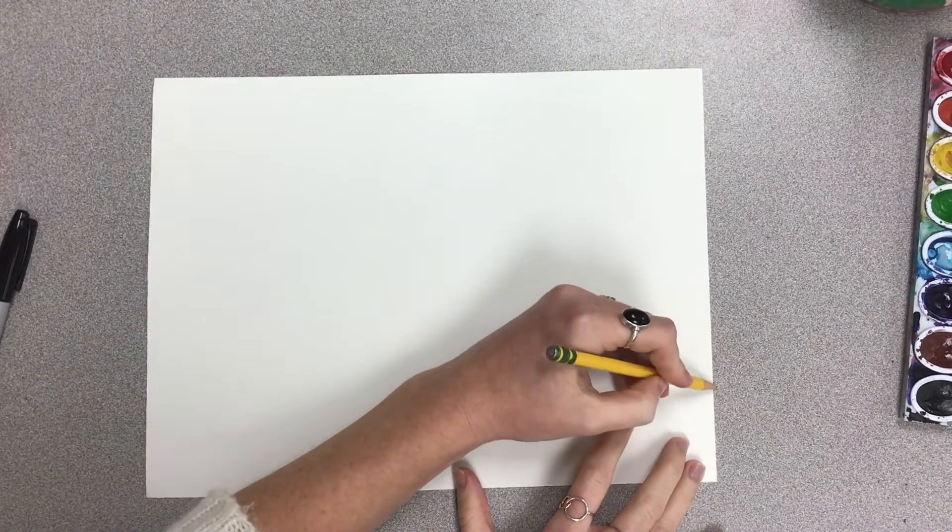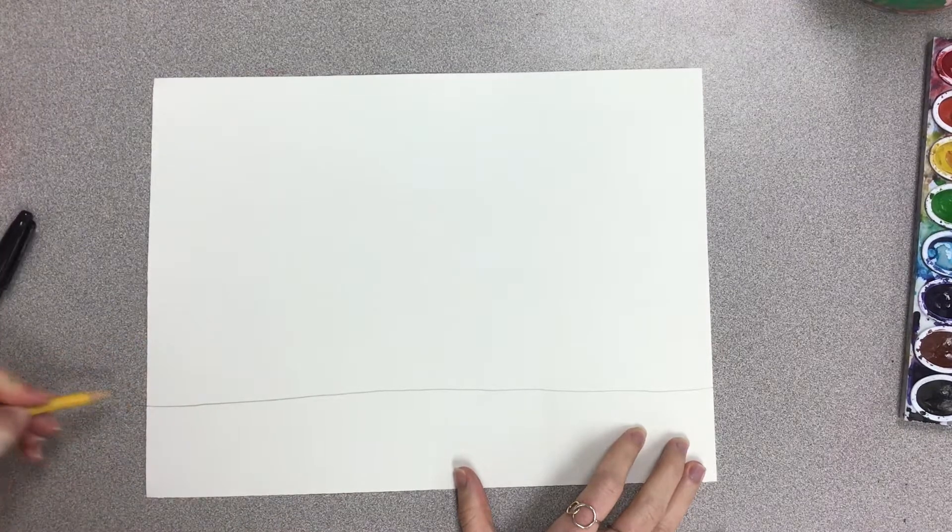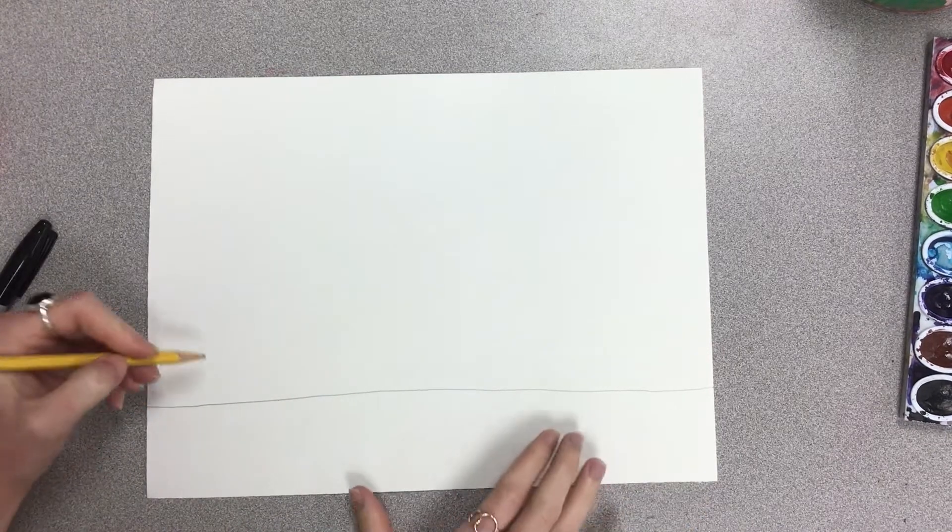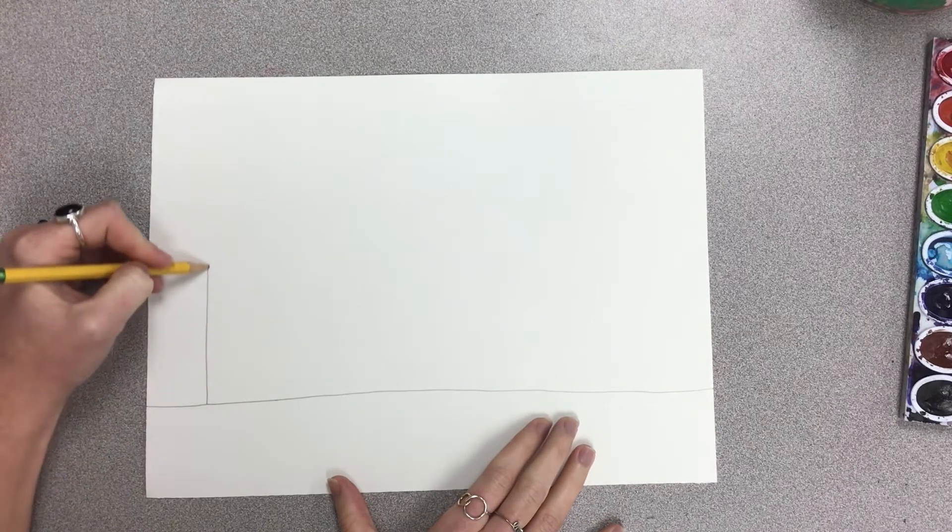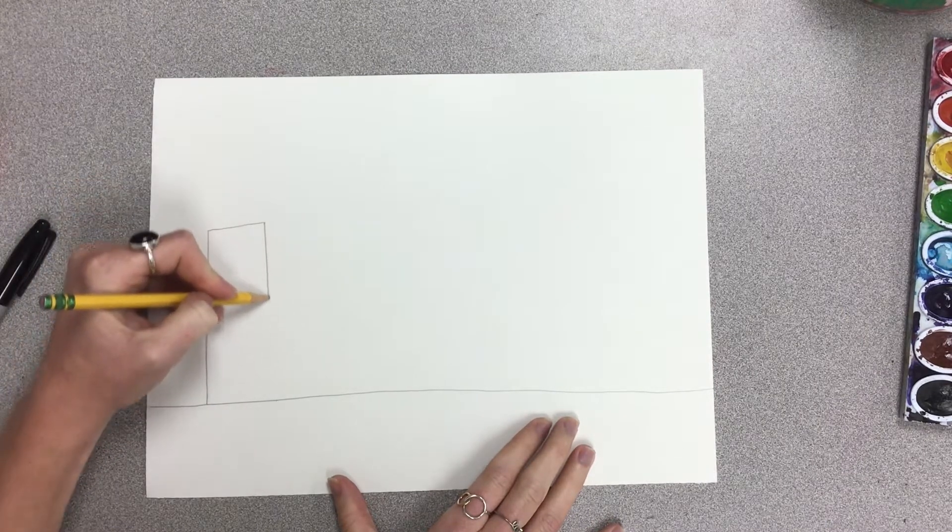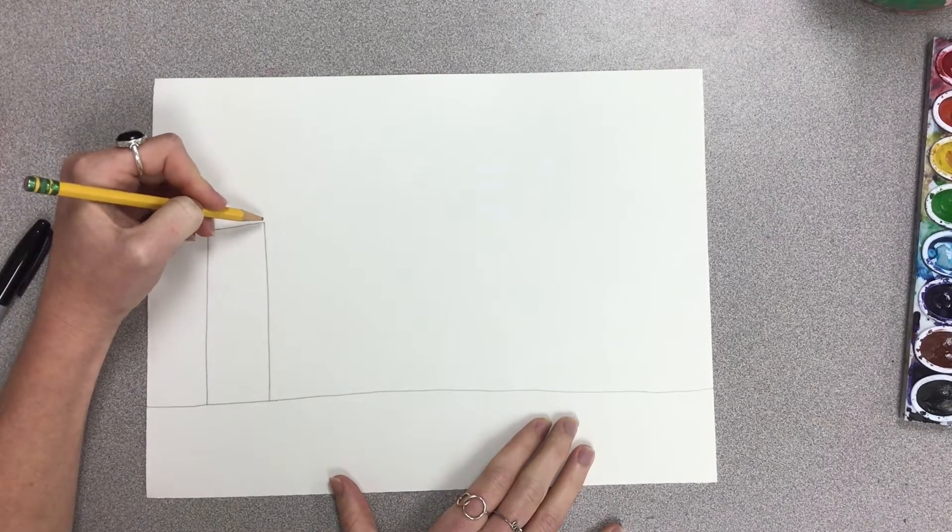To begin our cityscape we need a piece of paper horizontally, landscape style, and that's because we are making buildings and they are tall but they also are wide. We're going to start by making a line towards the bottom of our paper. That's kind of like the ground line, and then we're going to draw some big long rectangles that are various sizes.